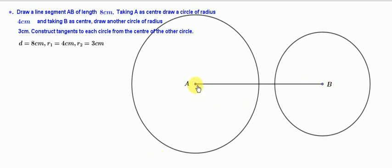Next, take measurement more than half of this line segment AB by compass and draw two arcs on either side of this line segment AB. First arc, second arc. Again, cut these two arcs from B with same measurement.